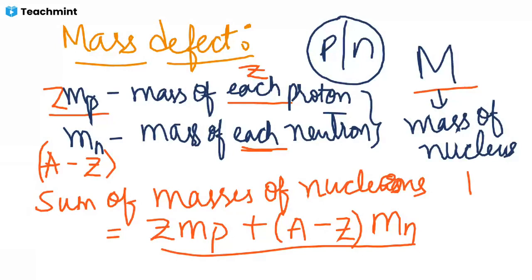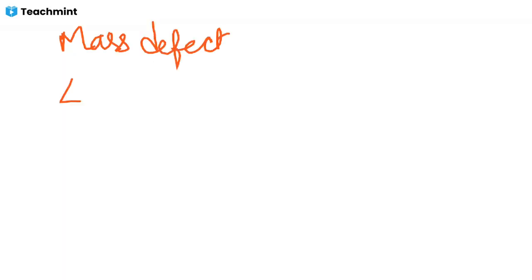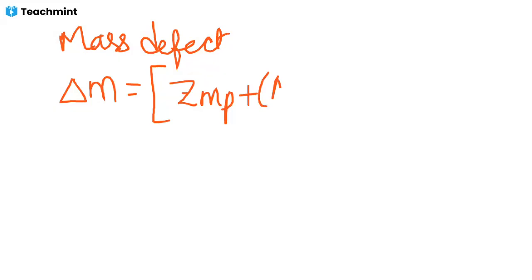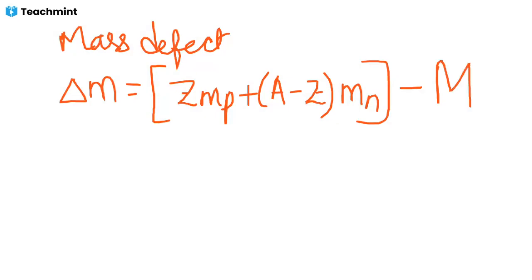The difference between the sum of masses of the nucleons and the mass of the nucleus is called mass defect. Mass defect is denoted by delta M. The mass defect formula is: delta M equals Z times mass of protons plus (A minus Z) times mass of neutrons, minus the mass of the nucleus M. The difference in mass is the mass defect.